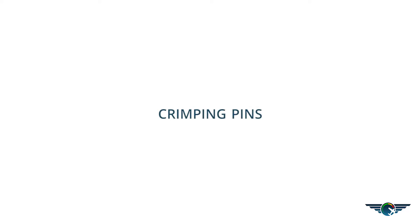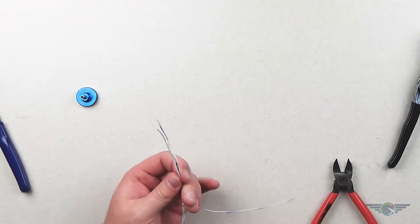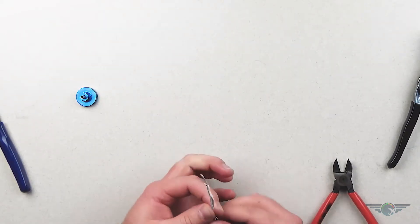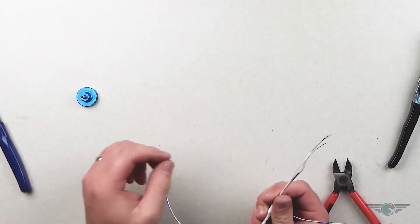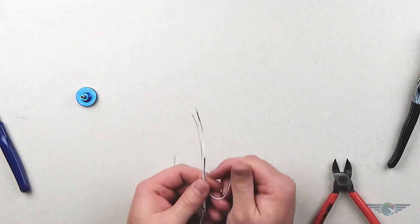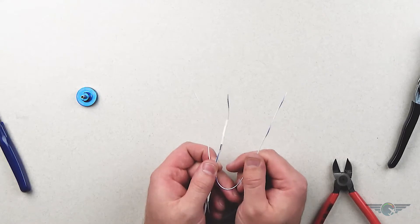Alright, so we've got our CAN bus ready to terminate, our end of line here, and our shield drain. Right now we're going to focus on these three wires and talk about crimping pins.